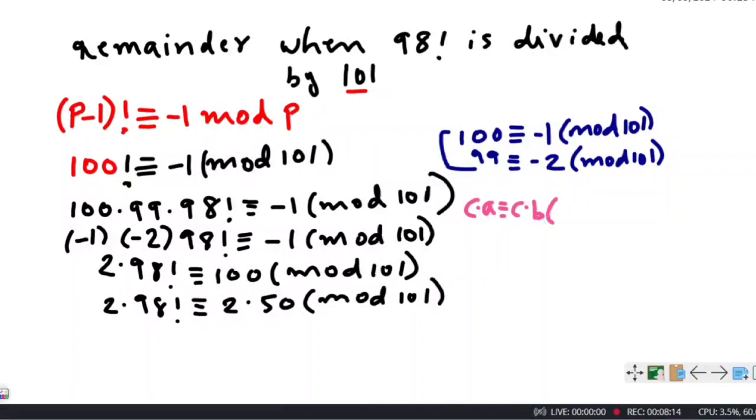If c × a is congruent to c × b mod m, then a is congruent to b mod m/d, where d is the gcd of c and m. So we can use this property here.